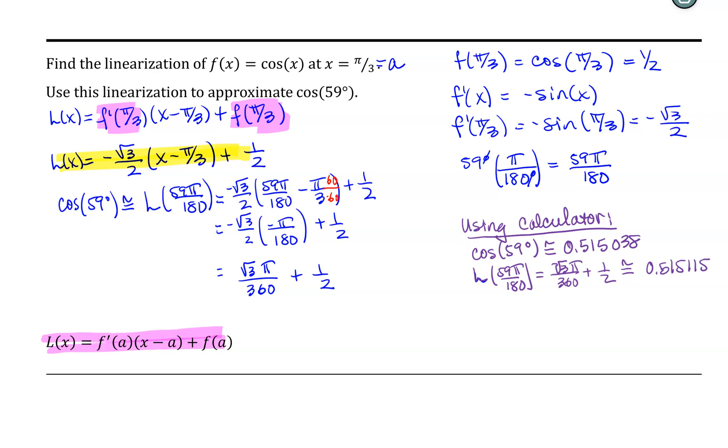So notice that our linear approximation is accurate to at least three decimal places in approximating the value of the cosine of 59 degrees. I hope you find this helpful.